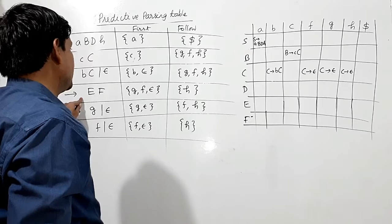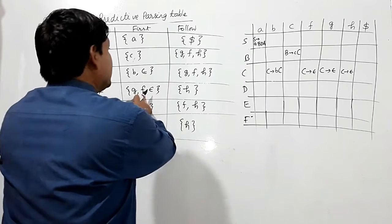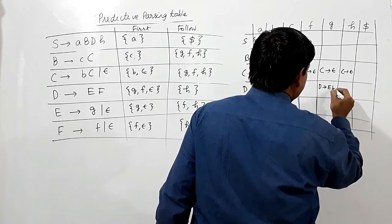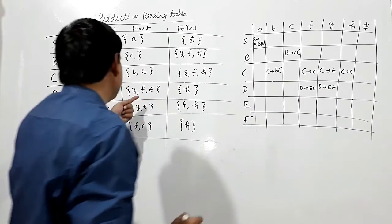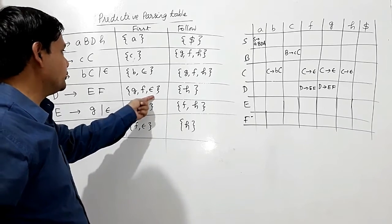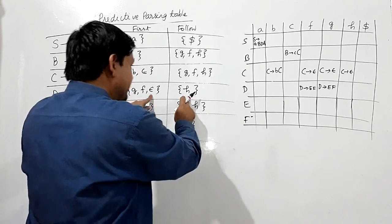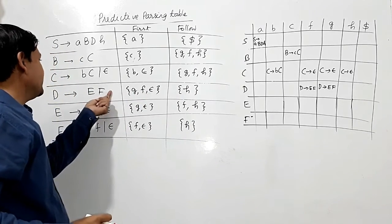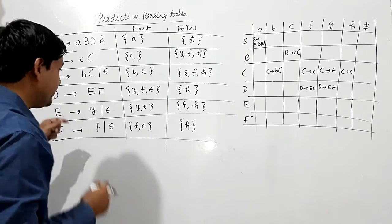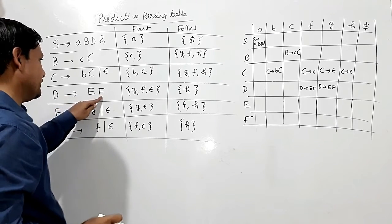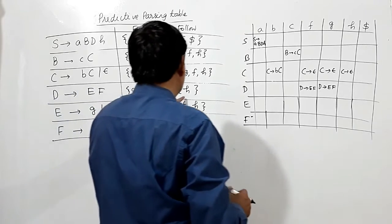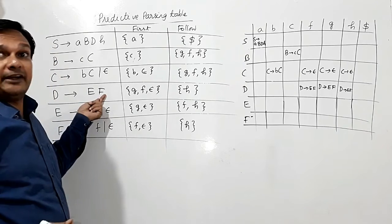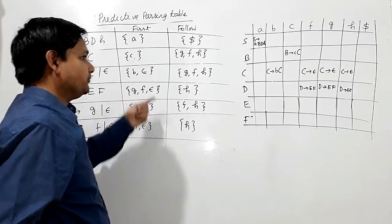For D: FIRST(D→EF) gives G and F from FIRST(E). So we write D→EF in cells [D, G] and [D, F]. Since Epsilon is also reachable (E→Epsilon and F→Epsilon), but D has no direct Epsilon production, we write D→EF in cell [D, H] as well, using the FOLLOW(D) = {H}.